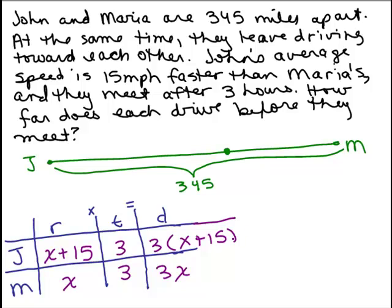Now let's go ahead and simplify John's distance. We're going to do the distributive property, 3 times x plus 3 times 15. So John's distance, 3x plus 45, is what I could put up here. That's the representation of that distance. So this is 3x plus 45. That's John's distance. And Maria's distance over here is 3x.